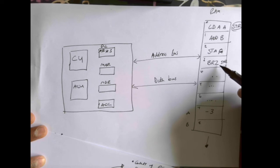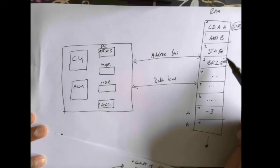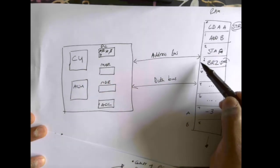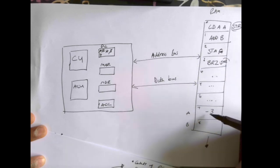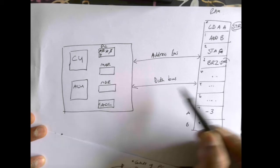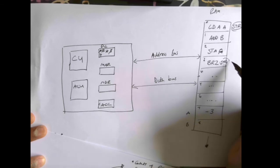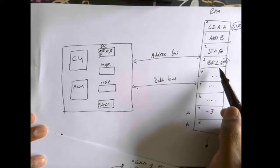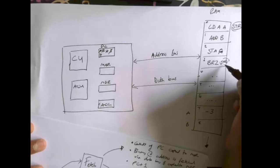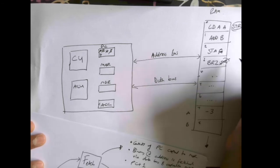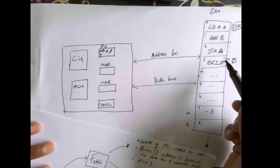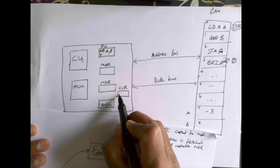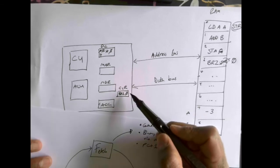During the fetch-execute cycle, I start with zero in the program counter. I fetch the first instruction, PC becomes one; fetch the second, PC becomes two; fetch the third, PC becomes three. Now imagine the value stored in the accumulator is minus three — that's not zero or positive so we need to loop. But when I fetched instruction three, as soon as that branch instruction was copied down, the PC was already replaced with four. The program counter was pointing to the next instruction, but I've determined the accumulator is not zero or positive.